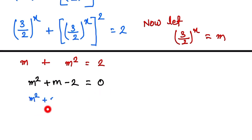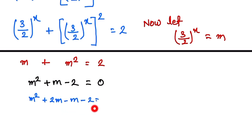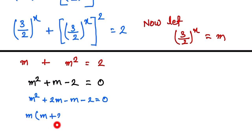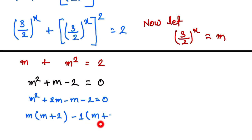We factorize this: m squared plus 2m minus m minus 2 equals 0. Taking common factors, we get m times the quantity m plus 2, minus 1 times the quantity m plus 2 equals 0, giving us m minus 1 times m plus 2 equals 0.